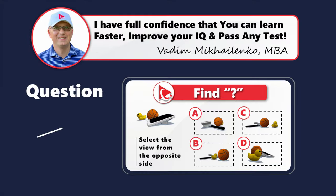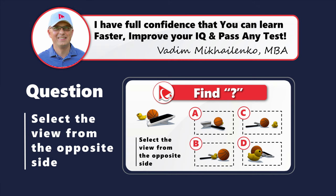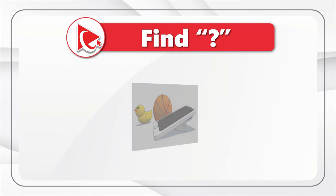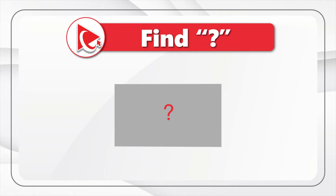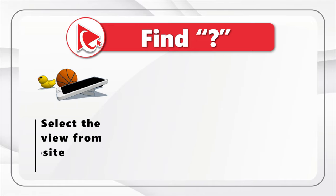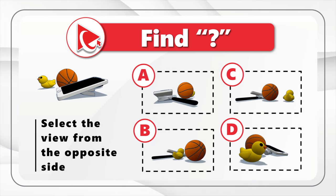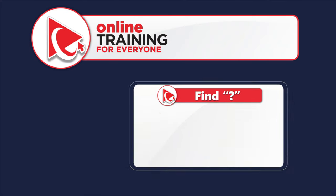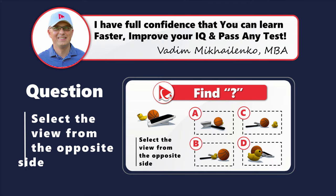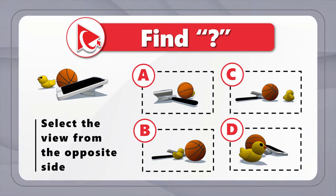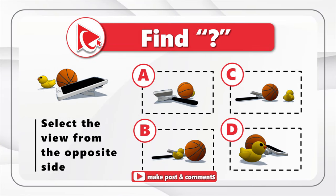Here's an amazing question to test your spatial reasoning. You're presented with a three-dimensional view, and you need to select the view from the opposite side out of four possible choices: A, B, C, and D. Take a close look to see if you can select the right solution — please look closely, as it may not be as easy as it seems. I'm moving forward to share my version of the answer, so please post in comments if you have a better way to solve it.